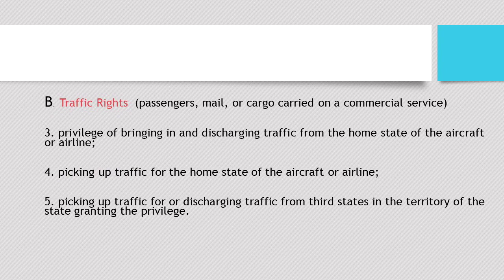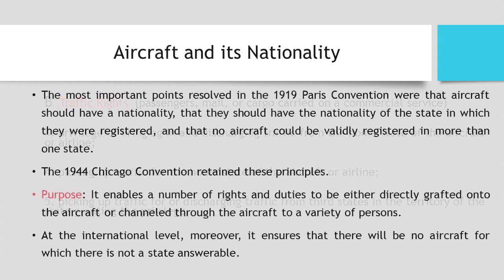The second category deals with traffic rights, which concern passengers, mail, and cargo carried for a commercial purpose. The three traffic rights are: the privilege of bringing in and discharging traffic from the home state to the aircraft; picking up traffic for the home state; and picking up or discharging traffic from third states in the territory of the state granting the privilege. These are the five fundamental freedoms of air.